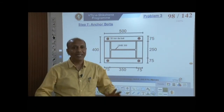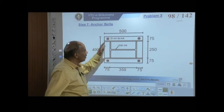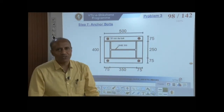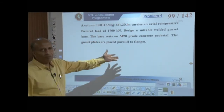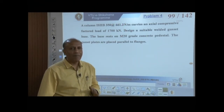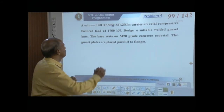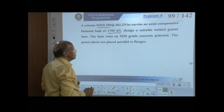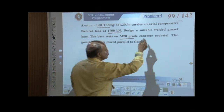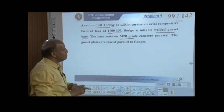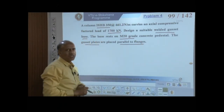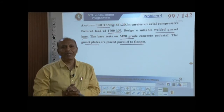Second problem: same column ISHB 350 carrying 1700 kN factored load on M20 concrete, but now the gusset plates are placed parallel to the flanges. The rest of the problem statement and material properties are identical to the previous problem.